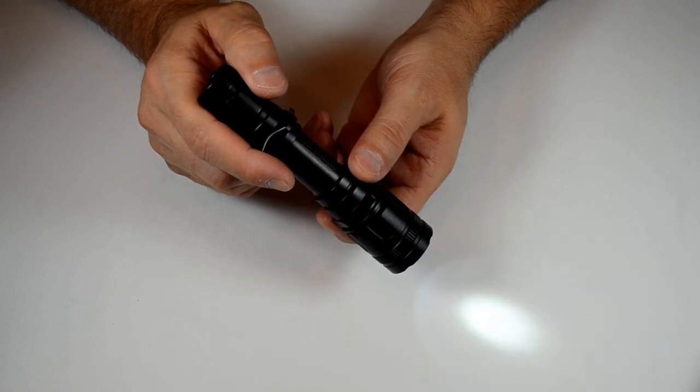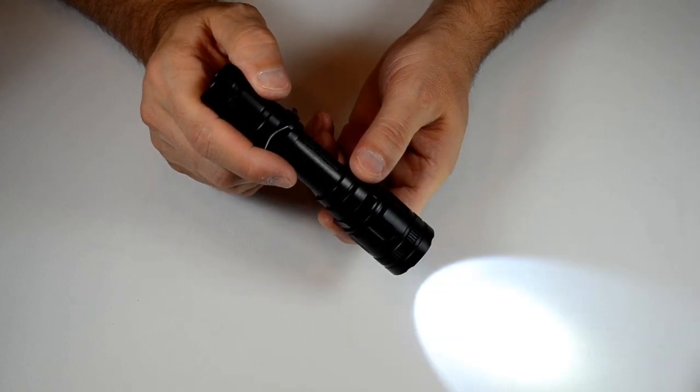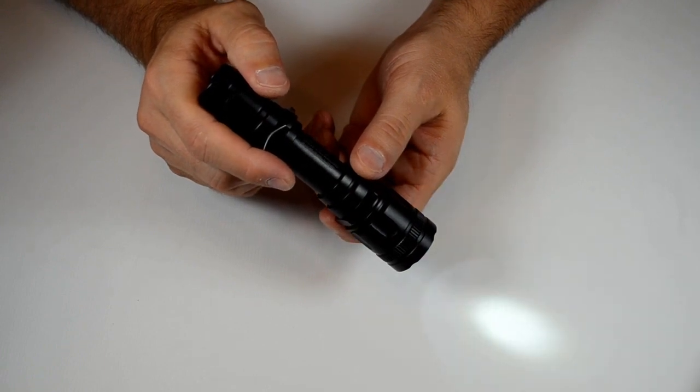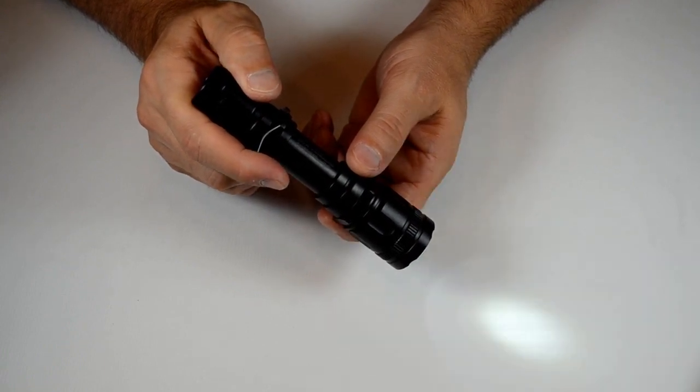So there's your low, medium, two medium levels, and then your high. To get to the strobe from on, you just hold the side button.